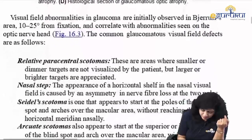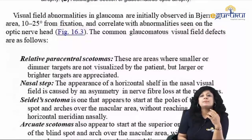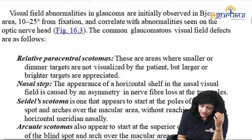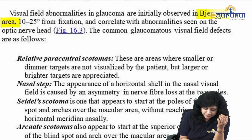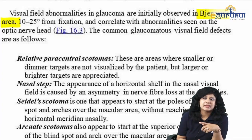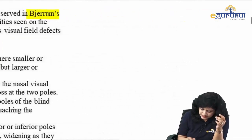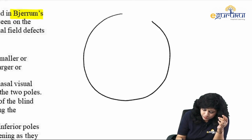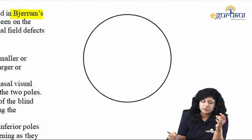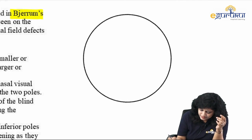Regarding visual field abnormalities in glaucoma, they are firstly found in Bjerrum's area. When talking about visual field defects, you should first be thorough with how retinal fibers are distributed.